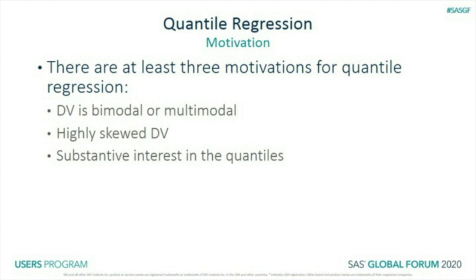So why do we model the mean if we're interested in the median? Or substantive interest might be in the quantiles. For example, in research into HIV and sexually transmitted diseases, we were very interested in people who had a lot of sexual partners. Or if you own a retail business, some customers spend a great deal more than almost anybody else — what motivates them might be different than the average customer.